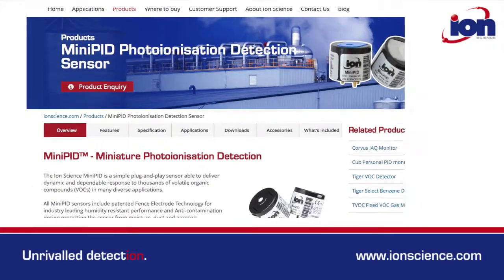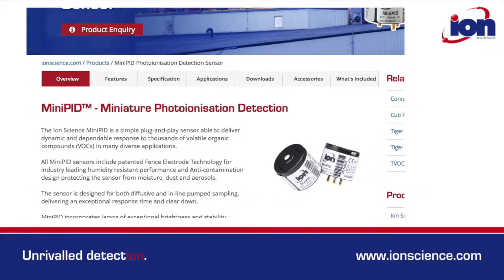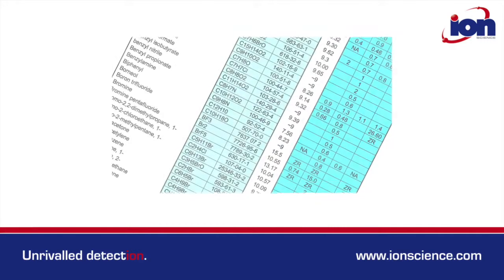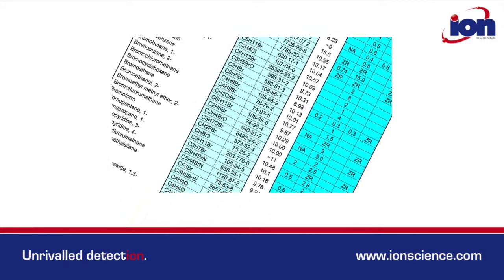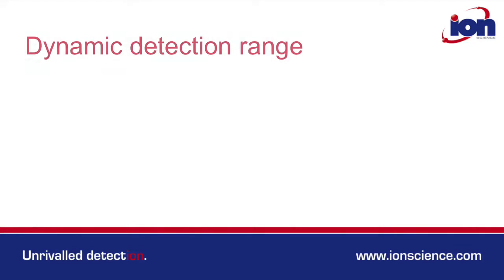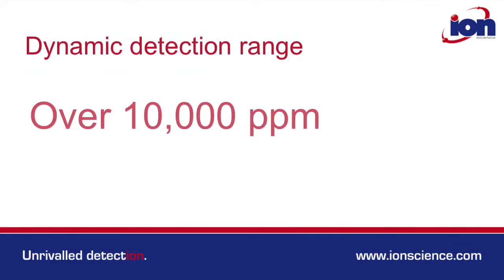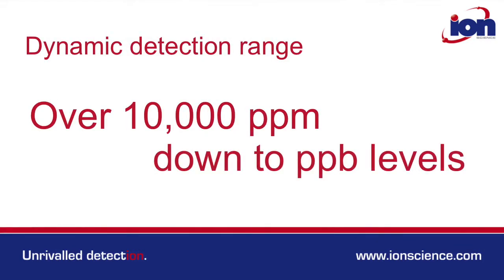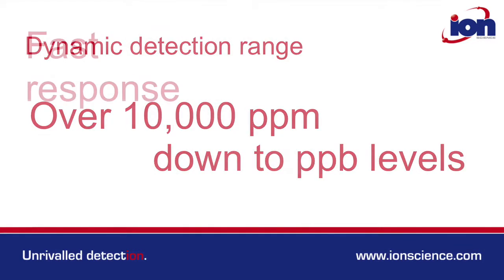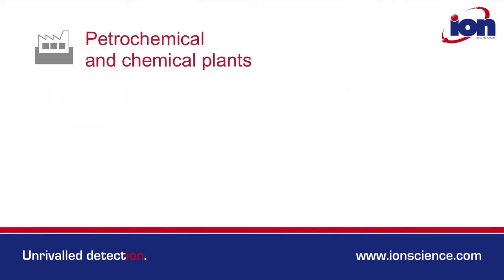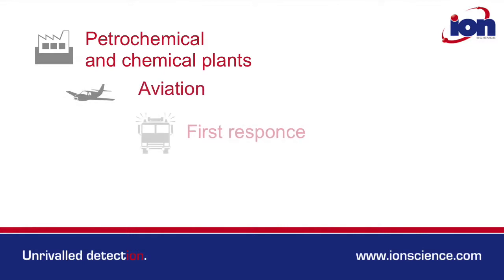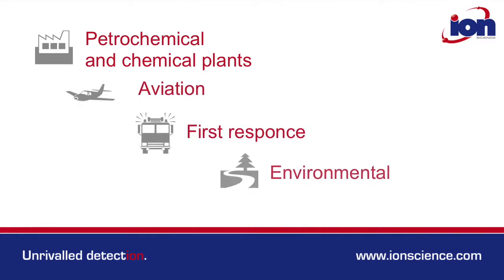PID is a great gas detection technology. It can detect hundreds of volatile organic compound gases. It has a dynamic detection range from many thousands of parts per million down to parts per billion levels, and it also boasts a fast response time. All this makes PID an ideal gas detection technology for a wide range of applications.